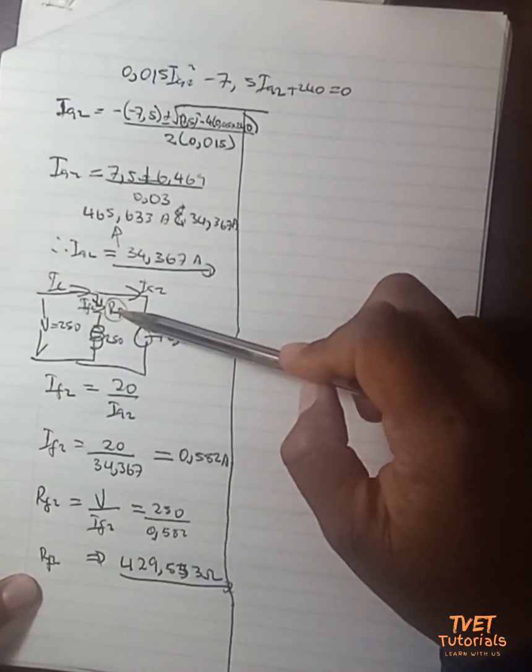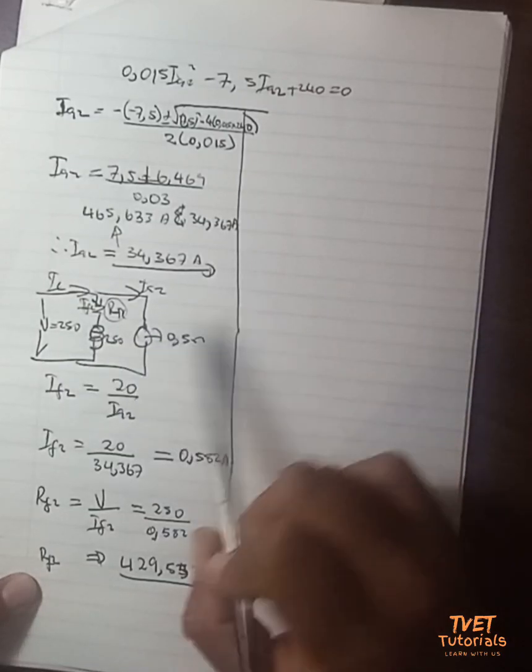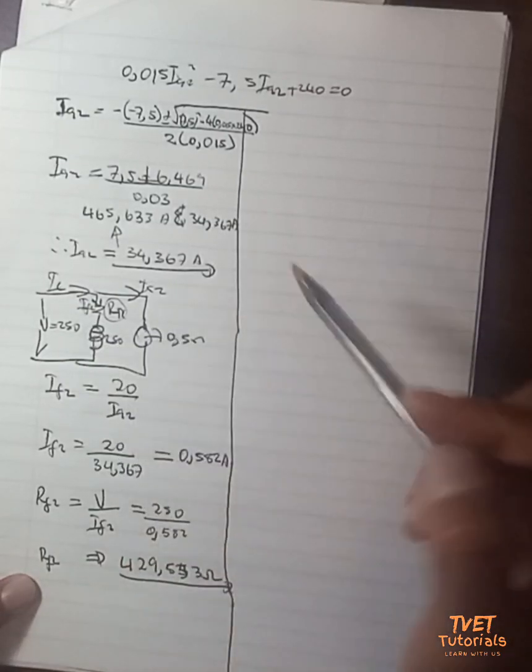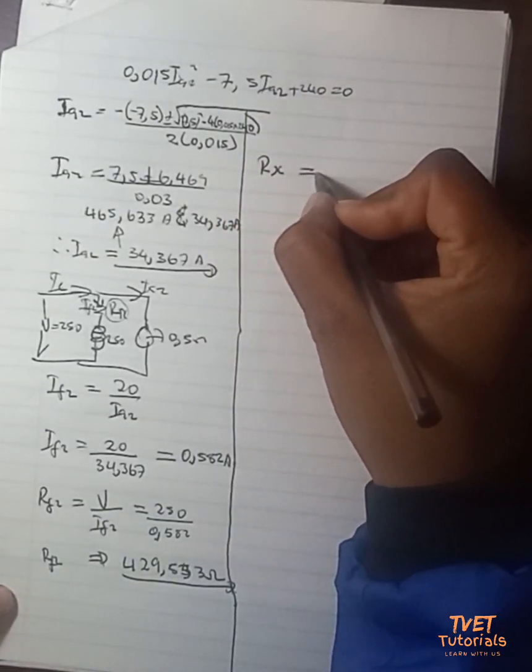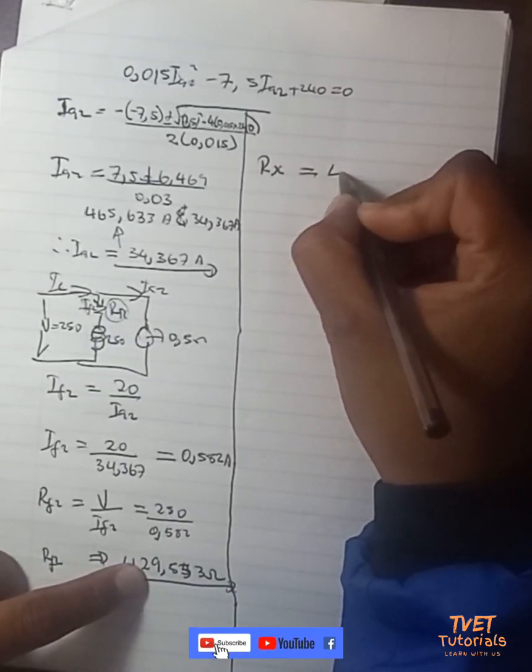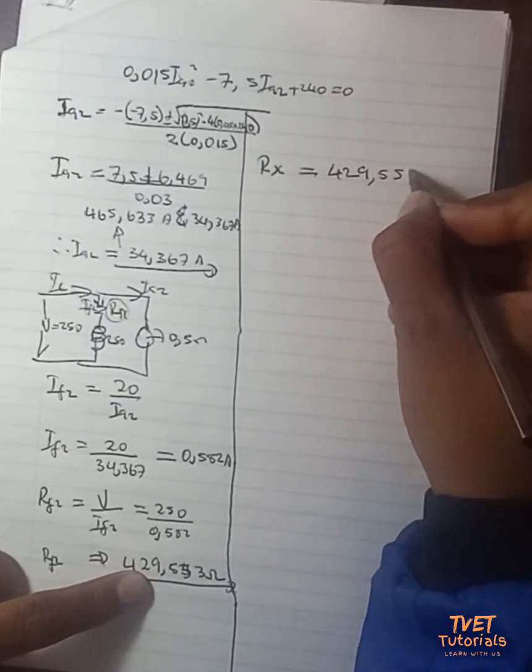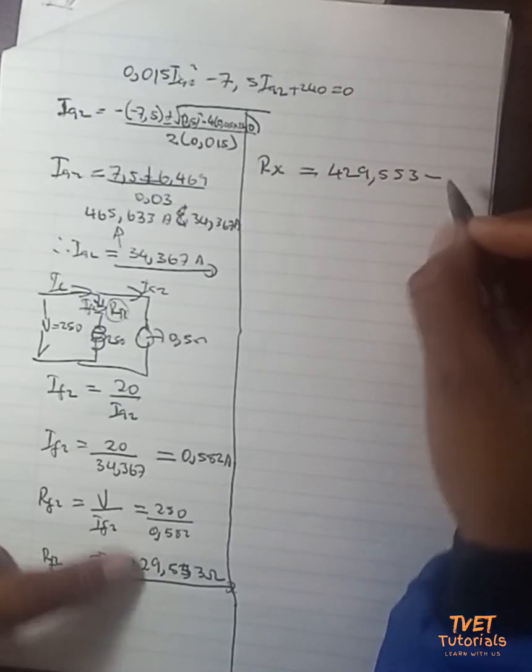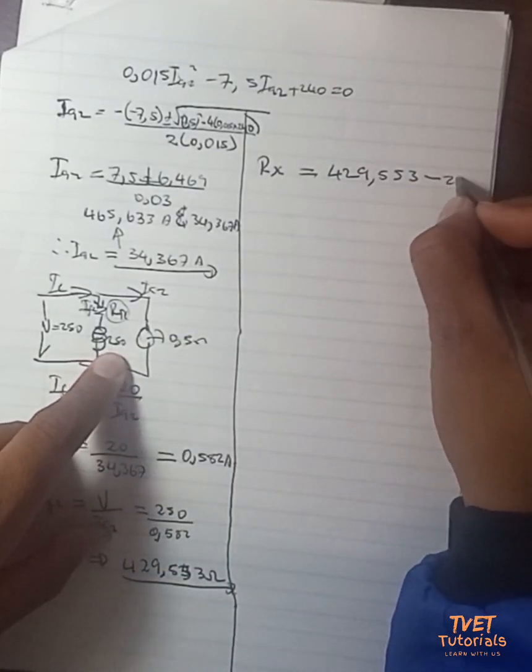So R_x will then be equal to the 429.553 minus the known value of 250.